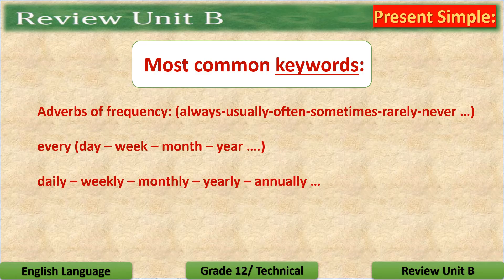The most common keywords for the present simple are adverbs of frequency, such as always, usually, often, sometimes, rarely, never, and so on. Also, we have every day, every week, every month, every year, and so on. Or daily, weekly, monthly, yearly, annually, and so on.